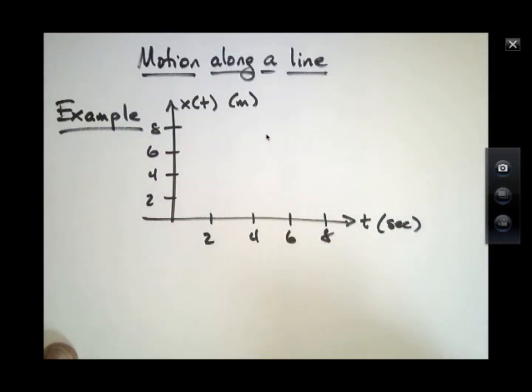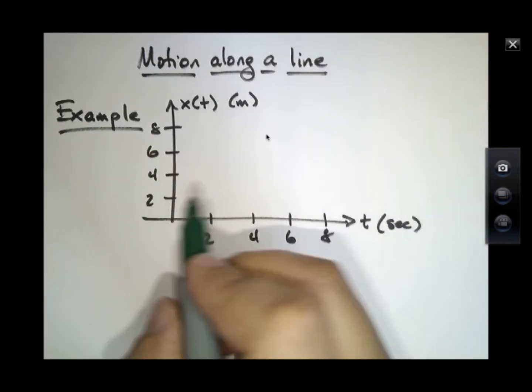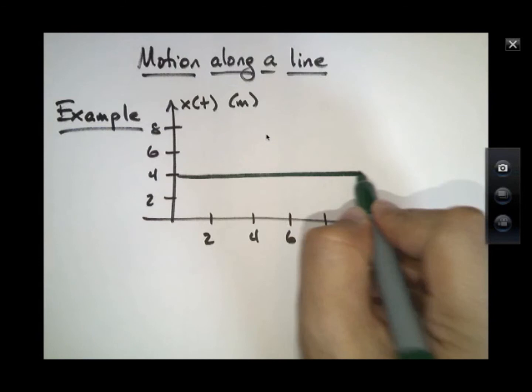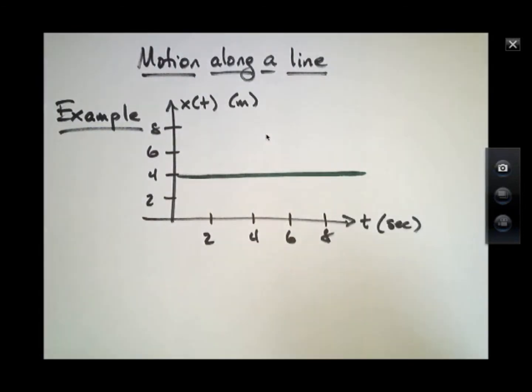So we might say that this function, x of t, represents the position of some particle at various times t. And I'm going to draw a very simple example to begin with. It's a constant function. It's one that has the same value at any old time along the graph here. So at t equals 2 seconds, it has a value of 4 meters. At t equals 6 seconds, it has a value of 4 meters. At t equals 8 seconds, it still has a value of 4 meters.